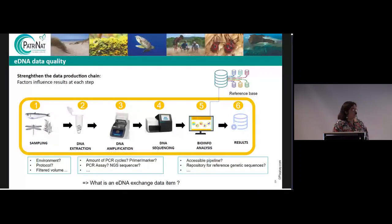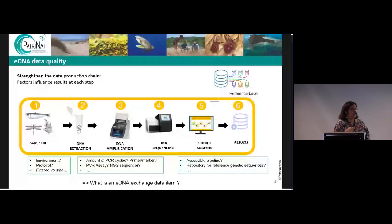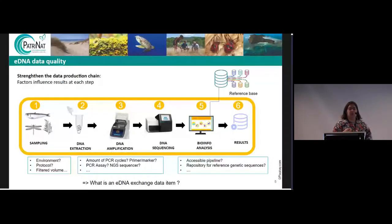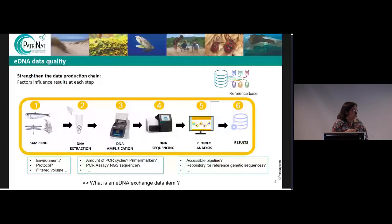What we want to do is strengthen the data production chain in France, taking into account that factors can influence results at each step. We really need to document and describe each step of the eDNA acquisition and identification protocols to avoid issues when something goes wrong. For example, at the sampling step we need information on the environment, protocols, and volume filtered; then how many PCR cycles were used and the sequences; and finally whether the pipeline is accessible and what reference genetic sequence repository was used.